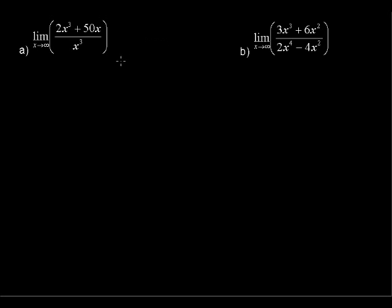In these examples, we'll talk about the limit as x approaches infinity. In the first one, we have the limit of the function 2x to the third plus 50x over x to the third as x approaches infinity. The first thing we want to do when we have a rational function or a polynomial function is to make sure that the domain is not restricted by the number that the limit is being taken to.